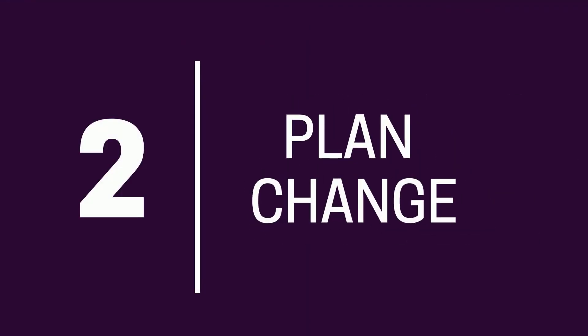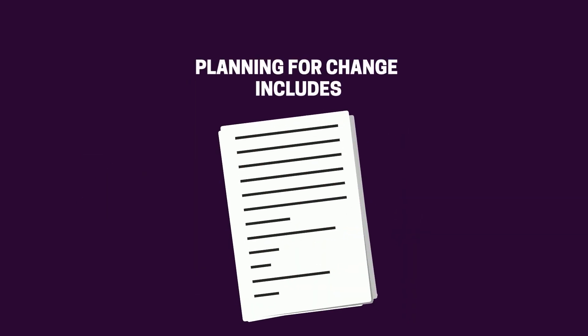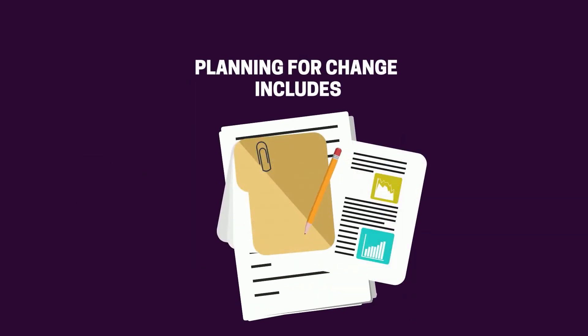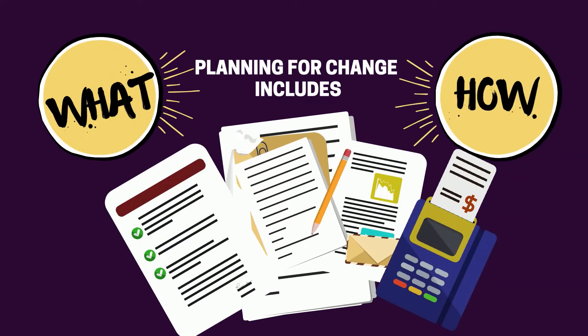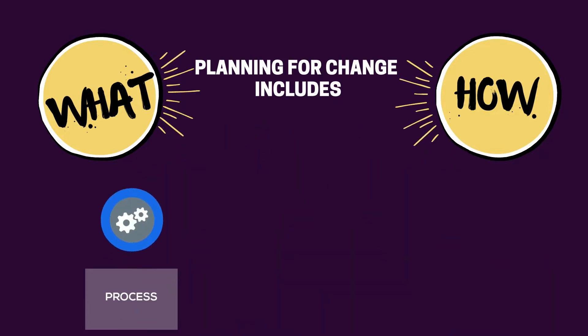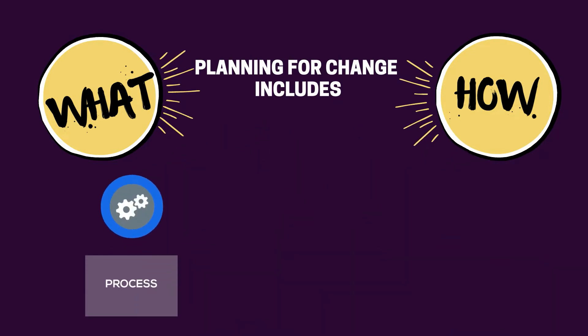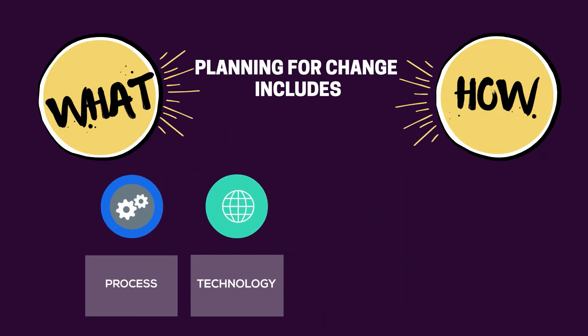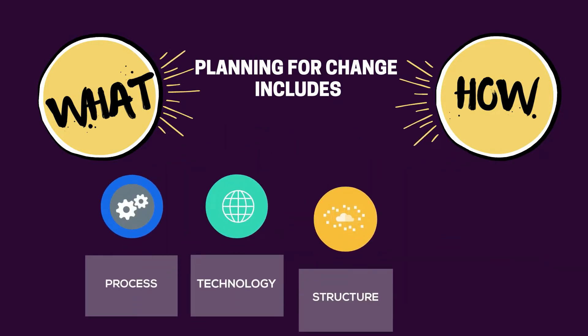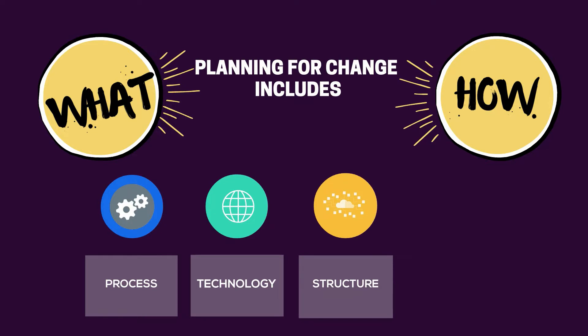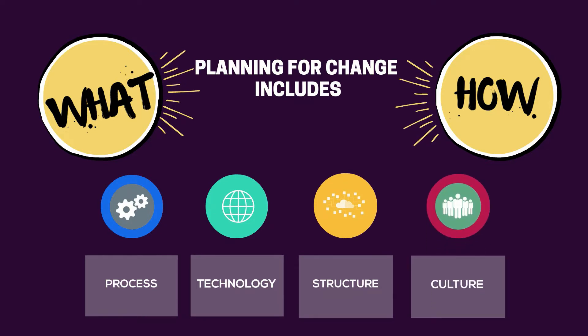Number two is plan change. Planning for change includes both the what and how of change, so that process, technology, structure, and cultural issues are all integrated into the overall program or project plan.